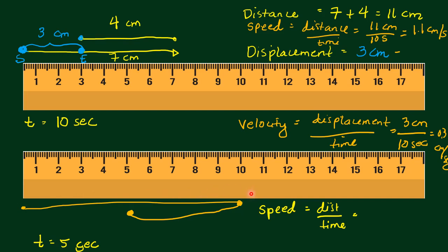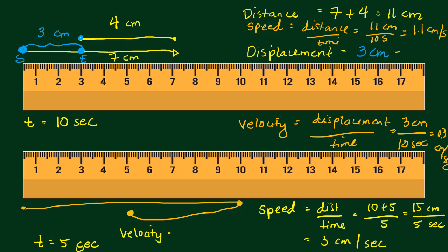The distance is 10 centimeters plus 5 centimeters, so that is 15 centimeters, all over 5 seconds. 15 over 5 is 3 centimeters per second. What about your velocity? Your starting point is at 0 and you ended at 5. The shortest distance is 5 centimeters. So your displacement is 5 centimeters over 5 seconds — that's your velocity, which is 1 centimeter per second.